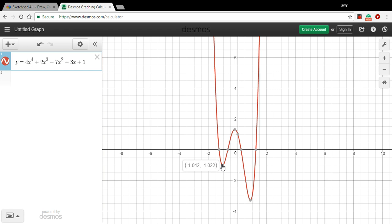So I've got, and we're supposed to go to nearest hundredth. So this is negative 1.04, negative 1.02, and this is 0.87 and negative 3.3.